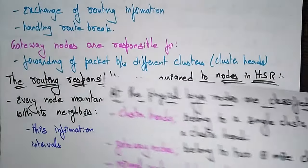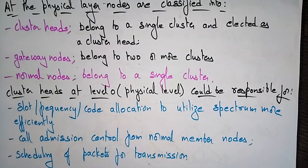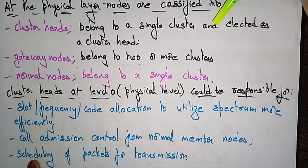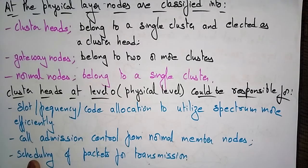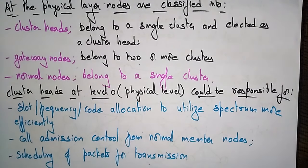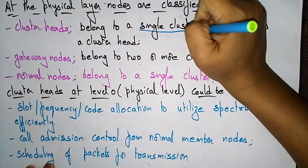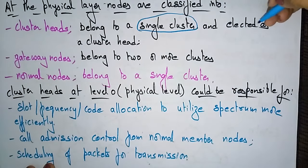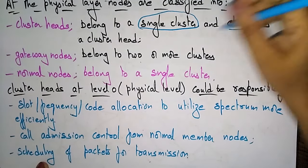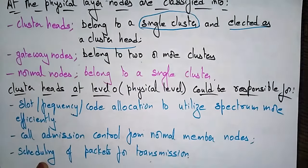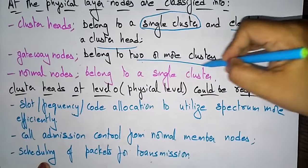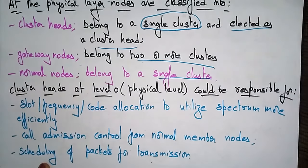At the physical layer, nodes are classified into cluster heads, gateway nodes, and normal nodes. Cluster heads belong to a single cluster and are elected as a cluster head. Gateway nodes belong to two or more clusters. Normal nodes belong to a single cluster.